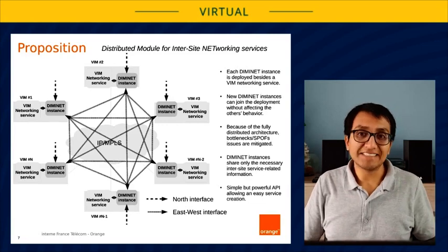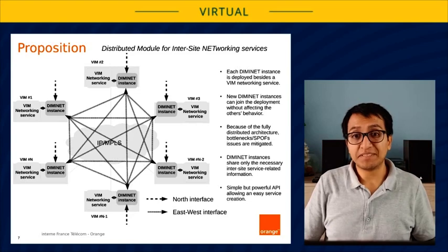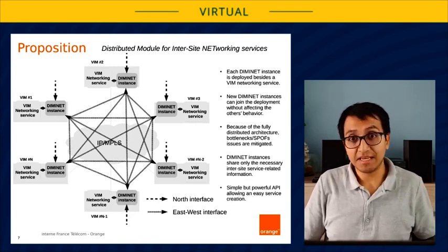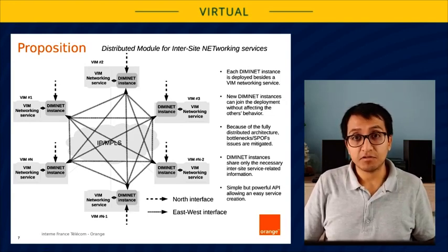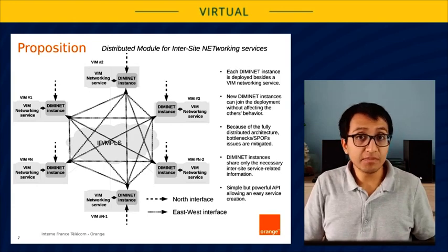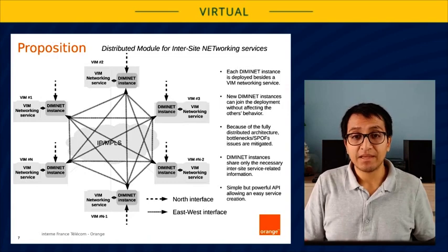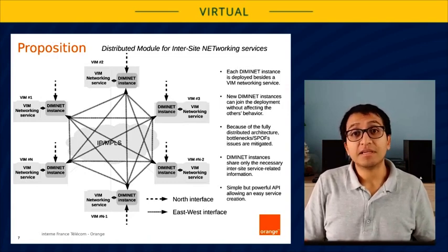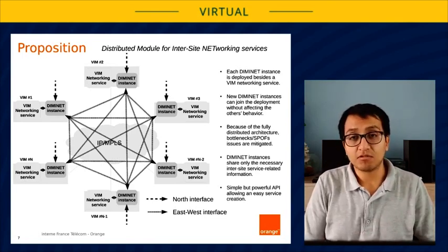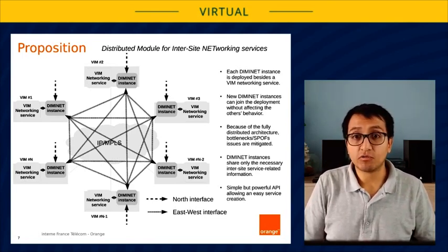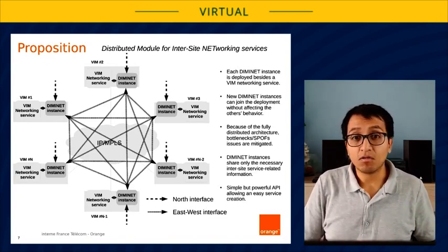Diminet relies on a fully distributed architecture, where independent modules are deployed beside the networking VIM service, in this case Neutron. Since VIMs are independent among them, and also independent among modules, new Diminet instances can join the deployment without affecting others' behavior. Thanks to this architecture, single point of failure and bottleneck issues are mitigated, because we do not depend on a single point of entry to create inter-site resources, but instead, they can be created at all Diminet instances.